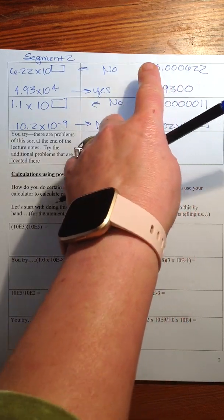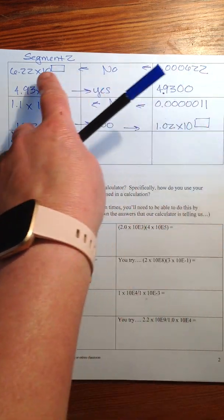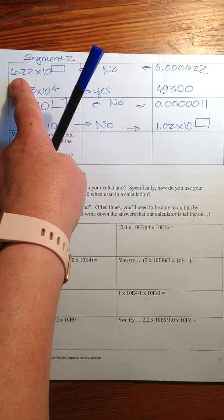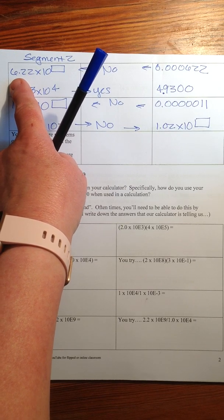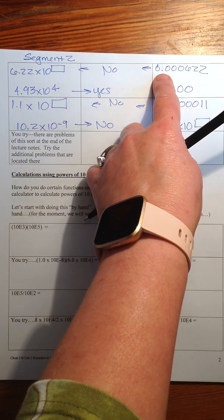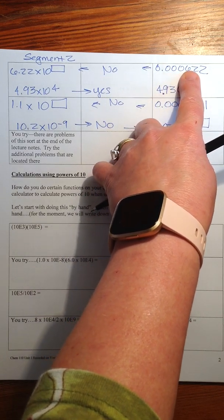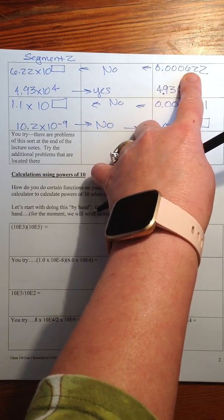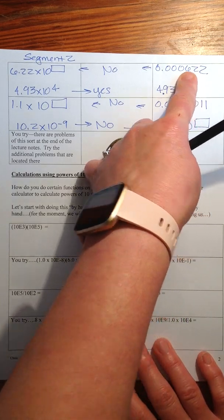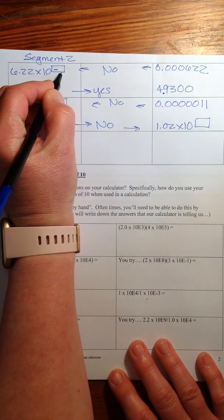This one, you want the number 6.22 so that the six is in the ones place. In order to do that you have to move this one, two, three, four places to the right. And this is a small number so this becomes a negative four.